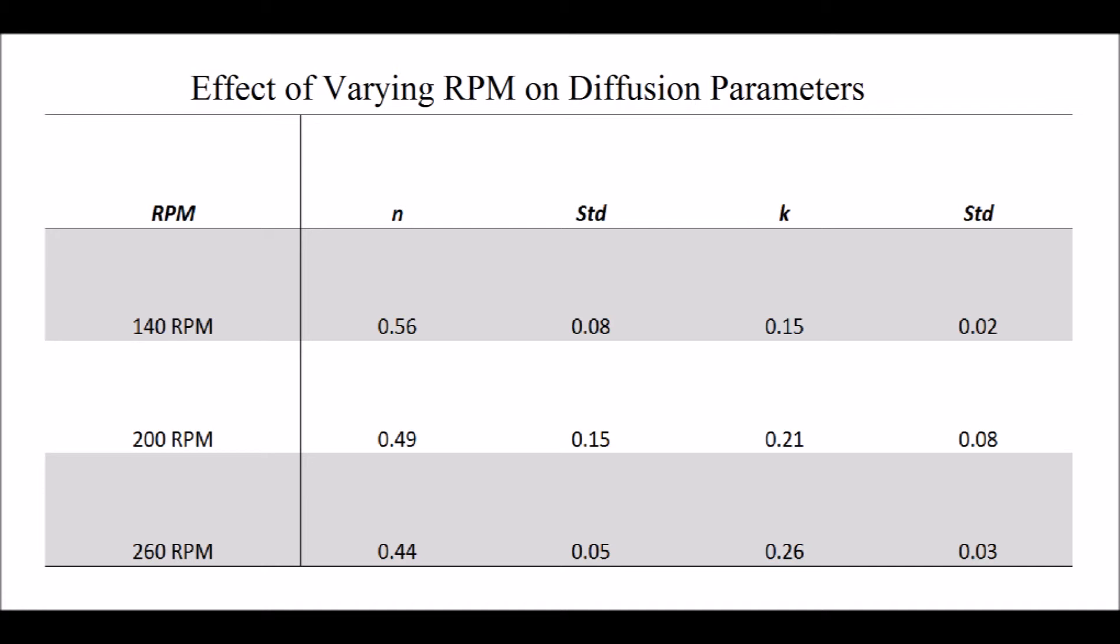Additionally, we notice that the K value goes up as RPM increases. Lastly, we notice error in our 200 RPM trial was extremely high as noted by our standard deviation. This was most likely caused by human error, such as improper dispensing of liquid from the syringe and putting the cuvette improperly in the UV spectrometer.